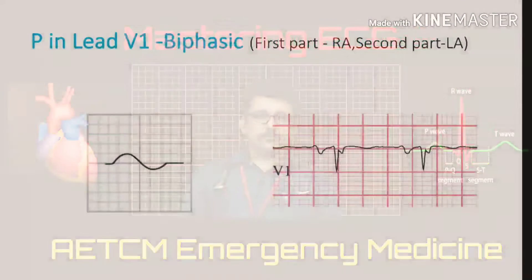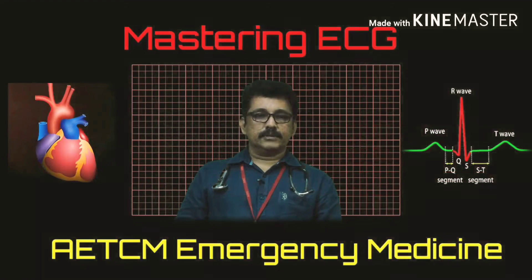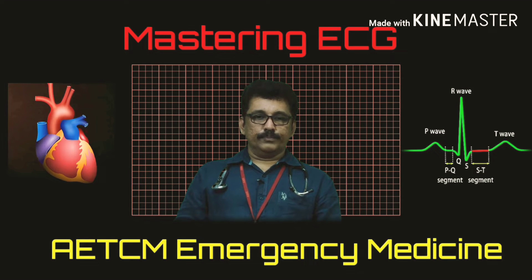In V1, the first part of the P-wave is positive, indicating the right atrium, and the second part is negative, indicating the left atrium. However, we don't normally use V1 as a rhythm strip — we take lead 2 as the rhythm strip.